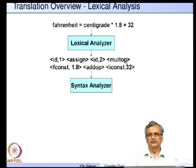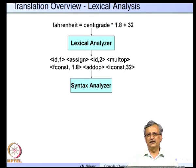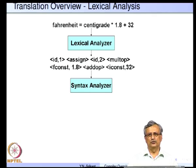The equal-to sign corresponding to assignment becomes a token of kind 'assign'; the multiply operator becomes 'mult_op'; plus becomes 'add_op'; the constant 1.8 is a floating point constant 'f_const'; and 32 corresponds to 'i_const'. We now have a stream of tokens where the first part — id, assign, id, mult_op, f_const, add_op, i_const — are typically integers. The second part gives hints about what type the token is: for 'id', the numbers 1 and 2 point to a table with indices containing the identifier string; for i_const and f_const the second part gives the value of that number.